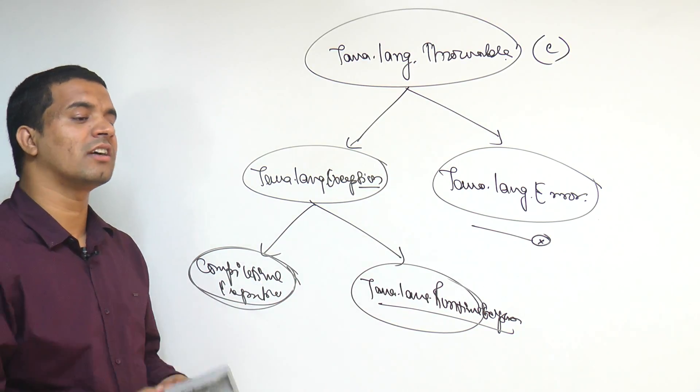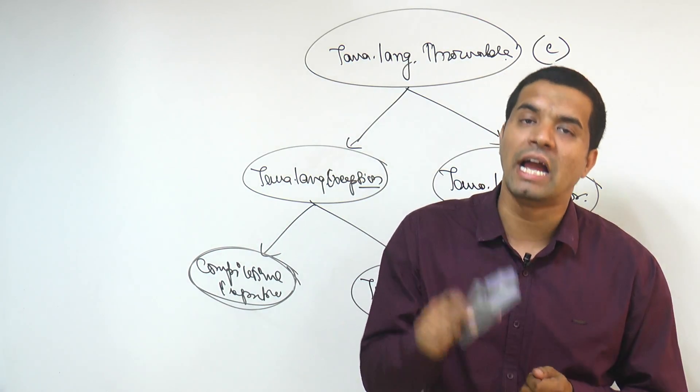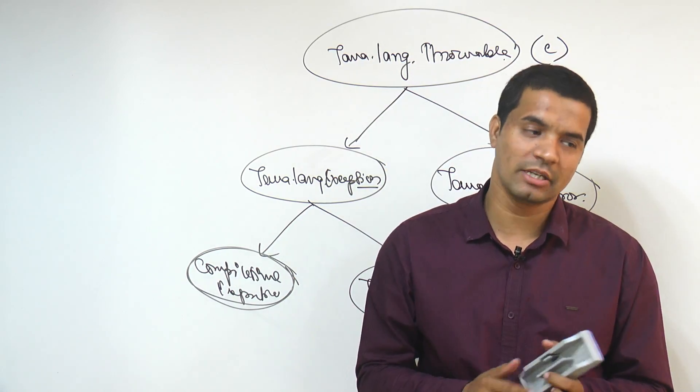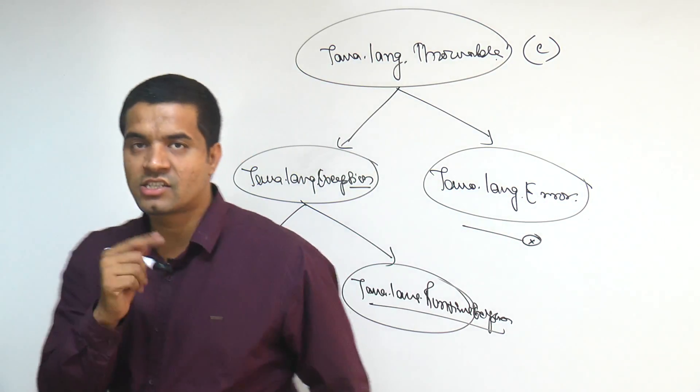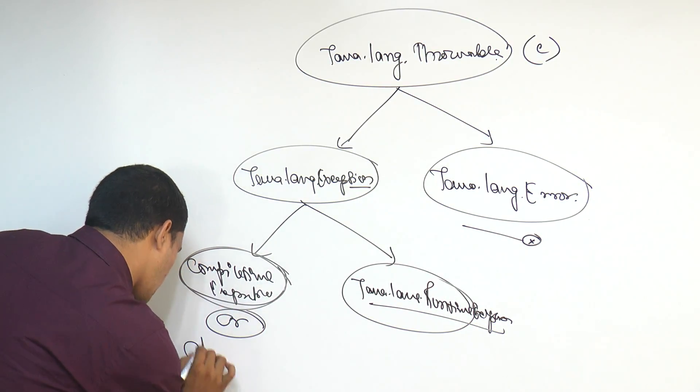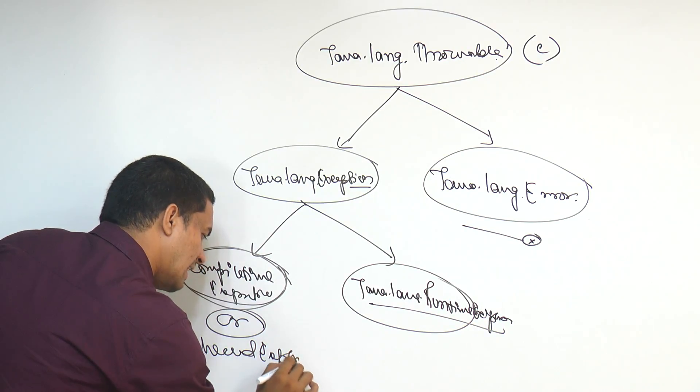Now what is the compile time exception? The exceptions which are being caught by compiler at the time of compilation, we will be calling it as a compile time exception. Compile time exceptions are checked exceptions.